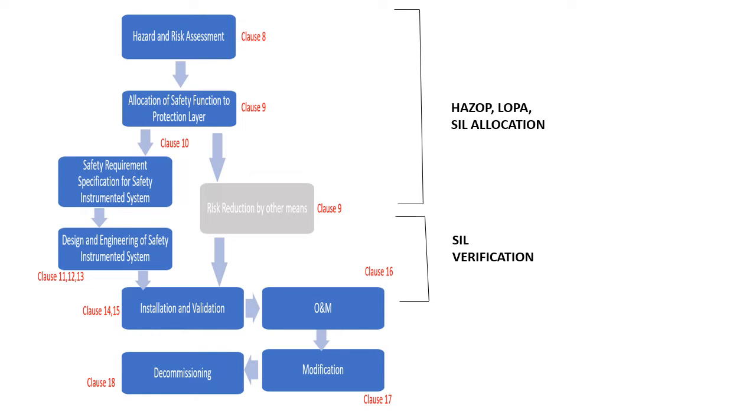This is the IEC 61511 safety lifecycle. If you see the chart, it starts with the hazard and risk assessment, and after hazard and risk assessment there is an allocation of safety function to the protection layer, then safety requirement specification for the safety instrumented system, and then design and engineering of safety instrumented system. The initial stages, like clause 8, clause 9, and clause 10.